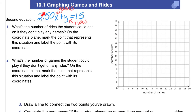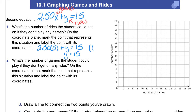Going on to our second equation: 2.5x plus y equals 15, where x represents the number of games and y represents the number of rides. Each game costs $2.50 and each ride is $1 — remember there's a 1 there even though it's invisible. Number 1: what's the number of rides a student could get on if they don't play any games? No games means x equals 0, so this whole part is just 0 and y equals 15. On the graph, that's the point (0, 15).